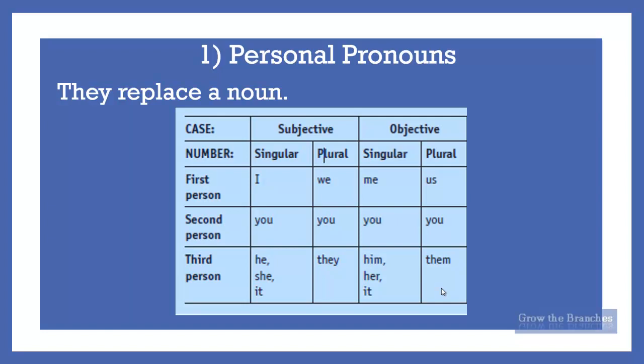Subject pronouns or nominative pronouns are: I, you, he, she, it, we, you, they. Objective pronouns are: me, you, him, her, it, us, you, and them.